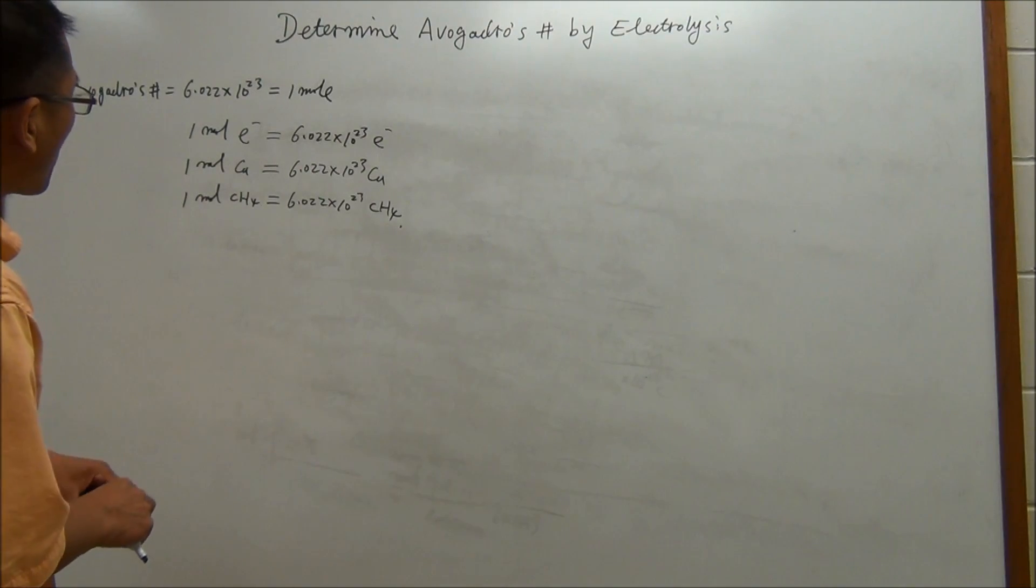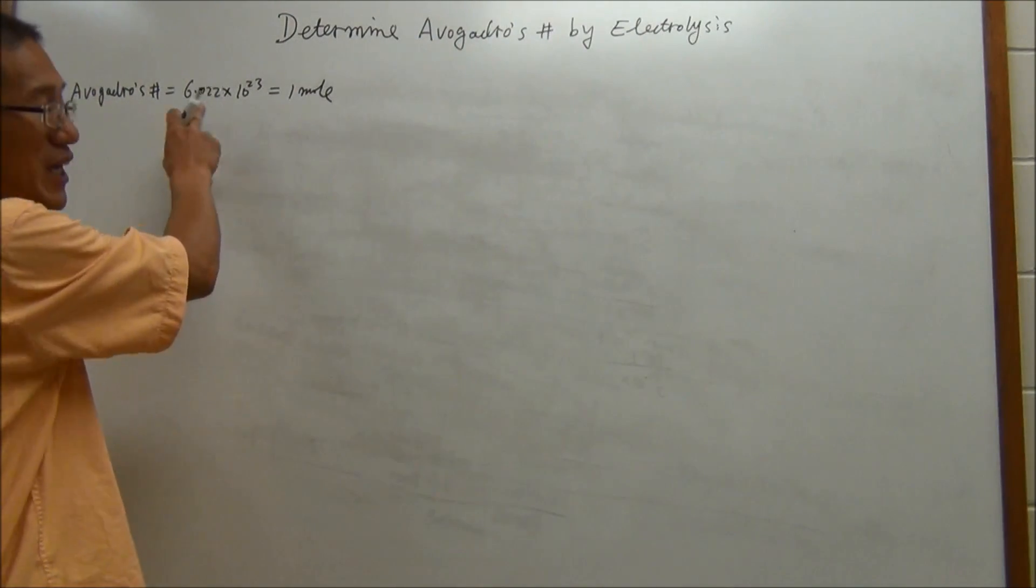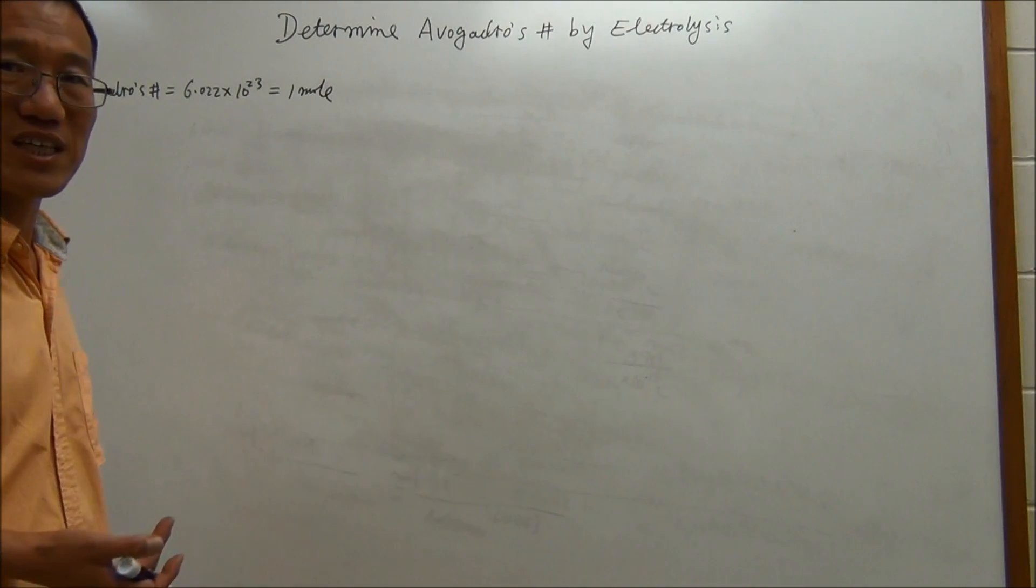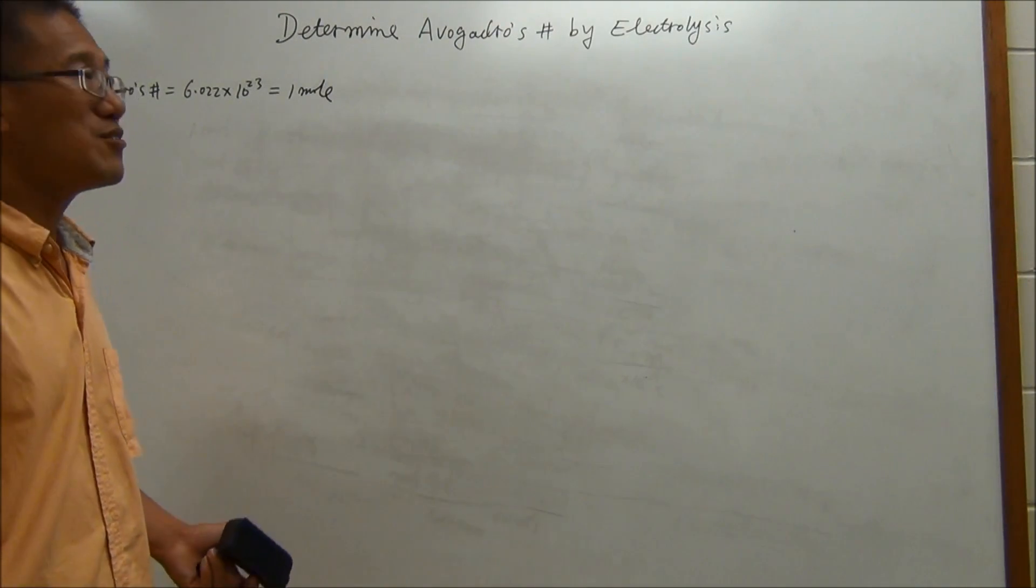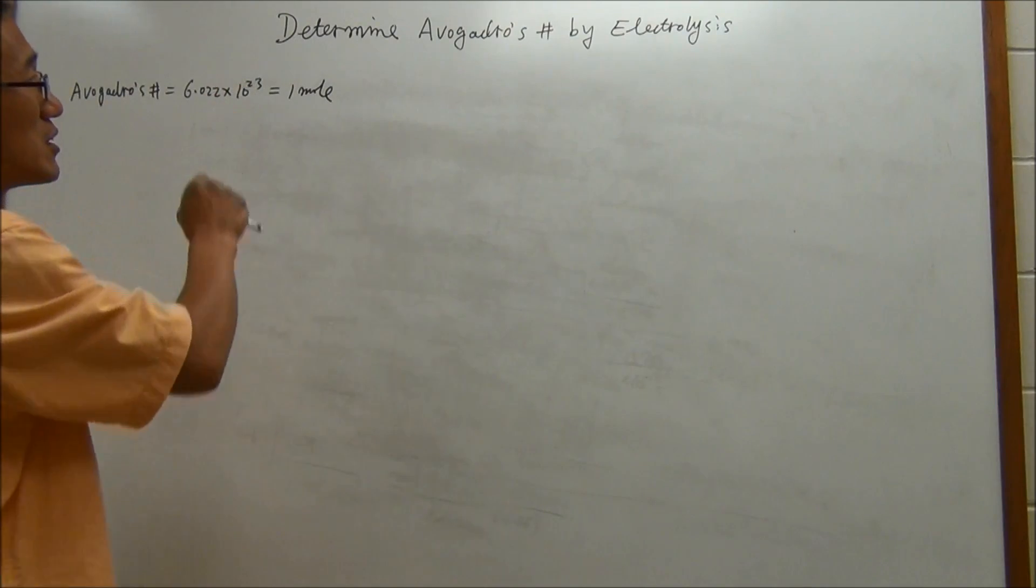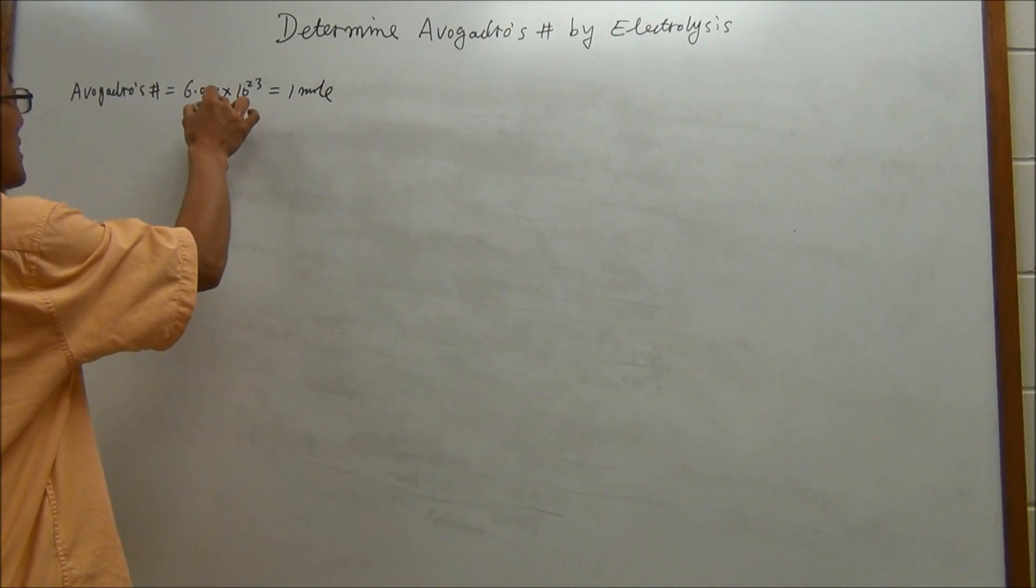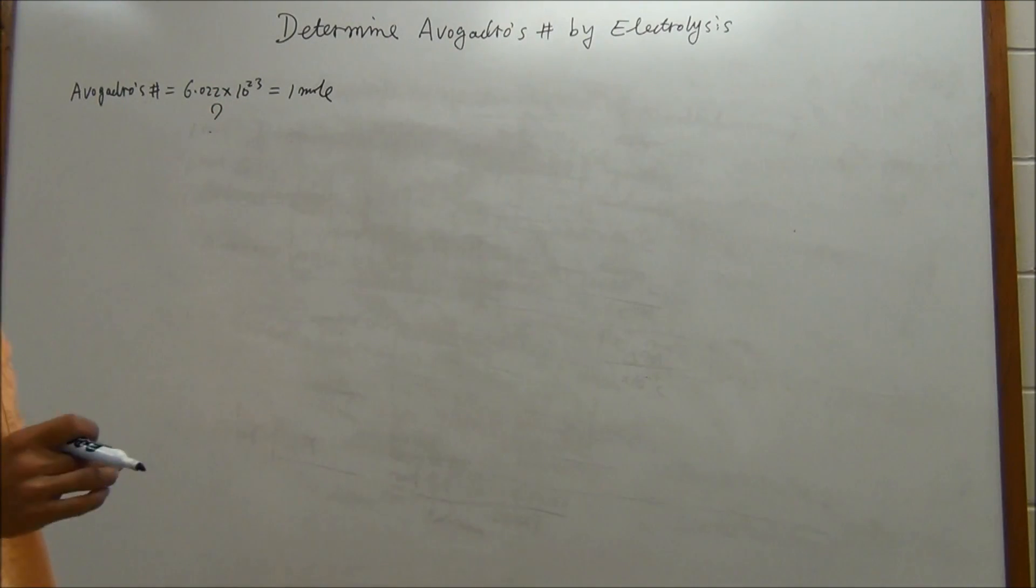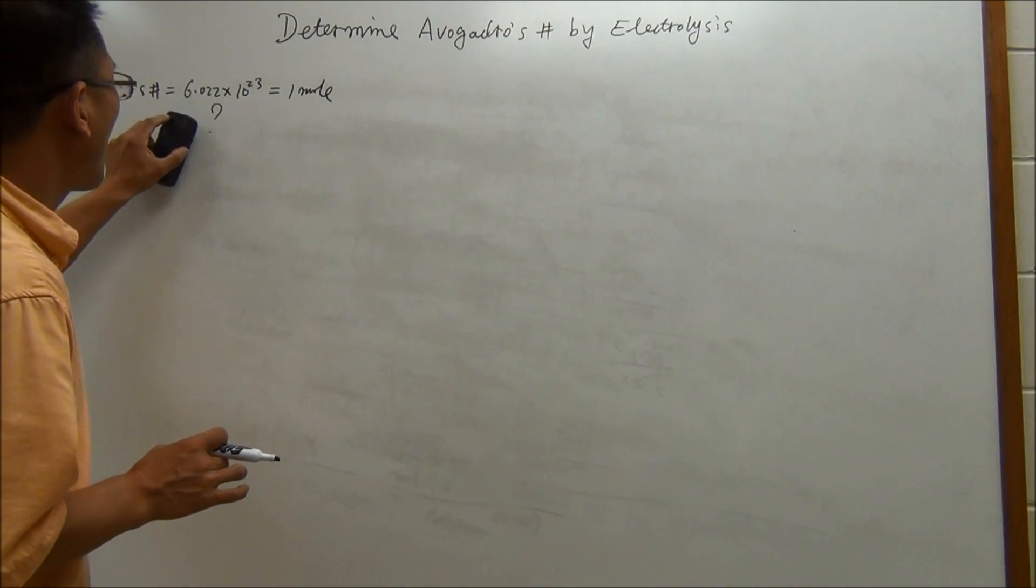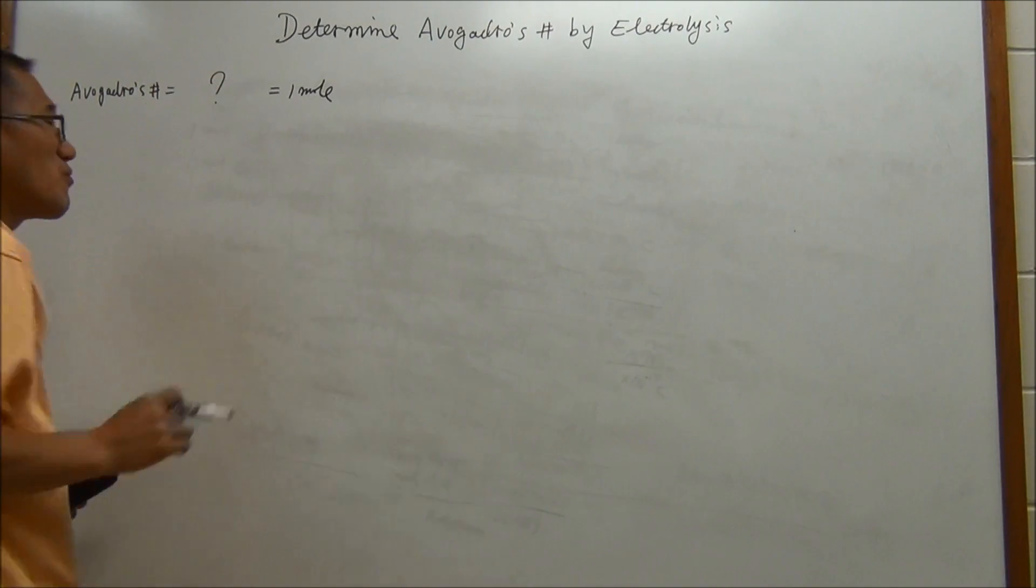In the experiment, you may wonder how do people get this weird number? It's not like 1 or 100, it's not even a whole number. How did people get this? There are many different methods available for us to use. Today, we're going to use electrolysis to determine what really this number is, if we trust our measurements. Remember, we don't know Avogadro's number, we need to look for this one.